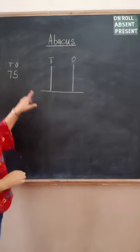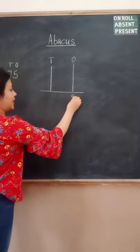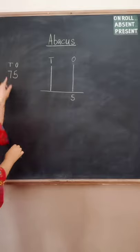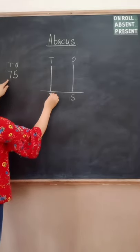Now we will look at the abacus. Under ones we have five. So we write five over here. And under tens we have seven. So we write seven in the tens tag.